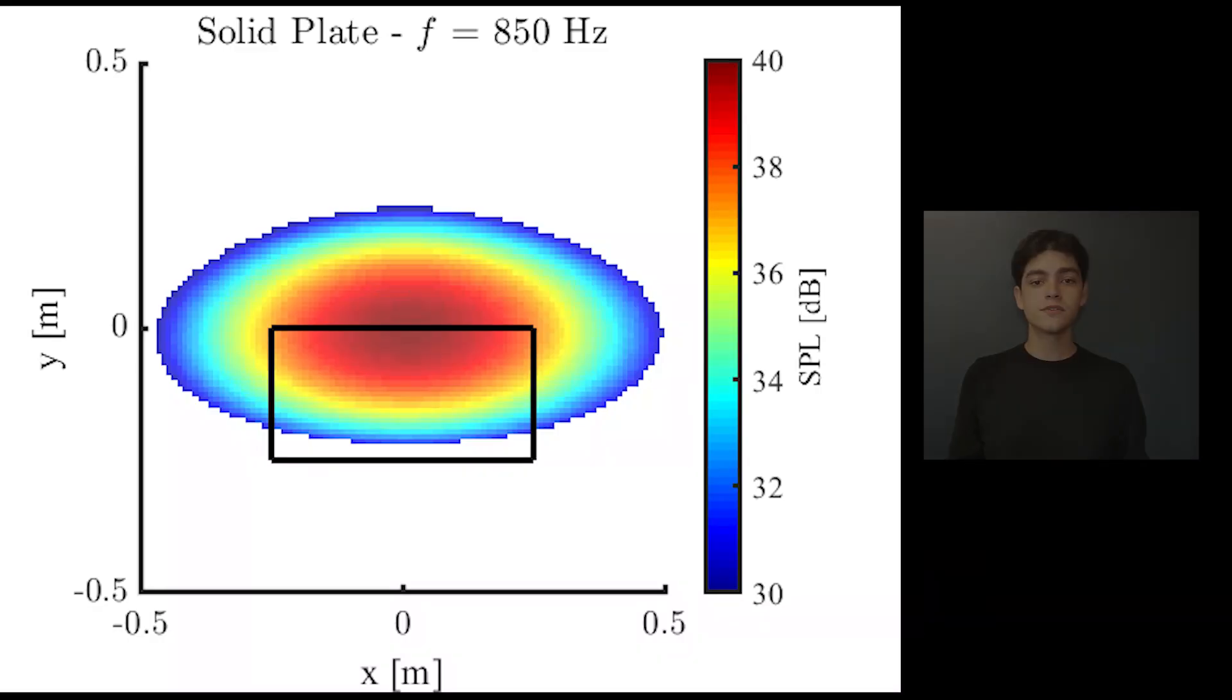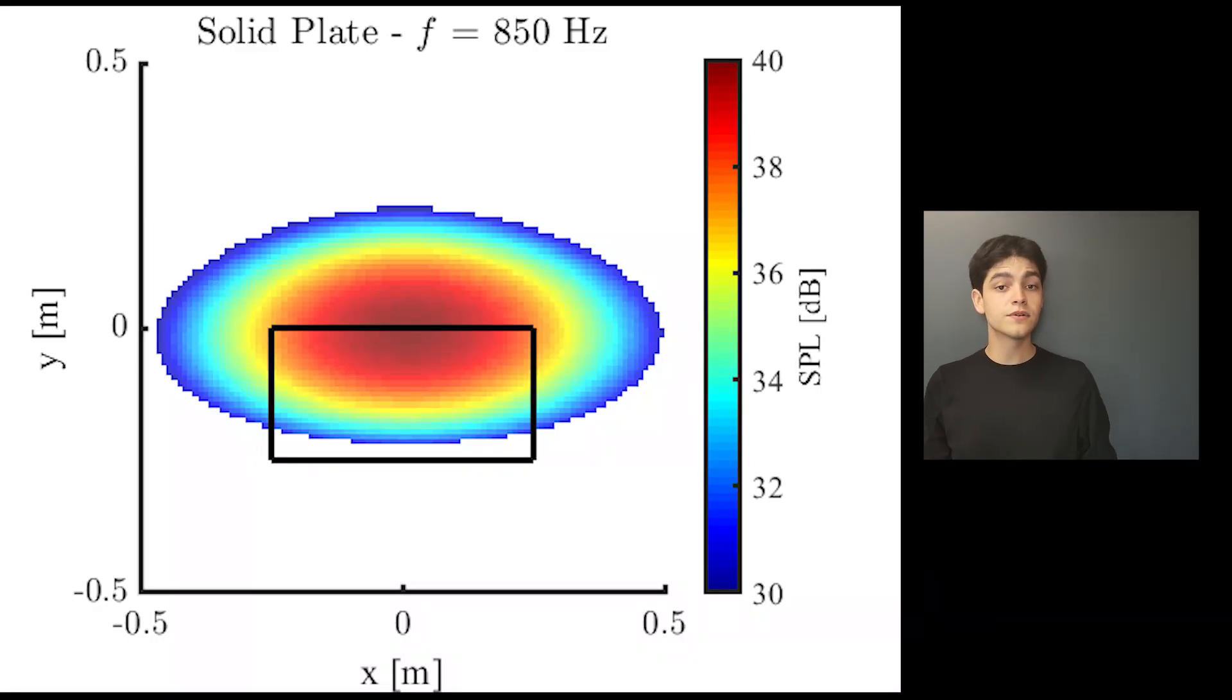I'm showing now some results from the experiments that we have here. These are beamforming plots, which we use to locate sound sources in our model. You can see first for the solid plate, we have here this contour for a frequency of 850 Hz. You see that there is a pretty strong, significant noise source at the trailing edge of the plate, and that, as I said, is the installation effect.